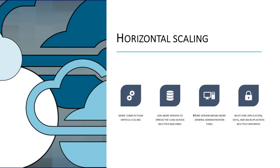Horizontal scaling, however, is a little more complex. When scaling systems horizontally — or scaling them wide, or scaling them out — what you typically do is add more servers to spread the load across multiple machines. With this type of scaling comes some added complexity. You're now in a situation where you have multiple servers that require general administration tasks, including updates, security, monitoring, etc. In addition, you need to sync your application data and backups across multiple instances.